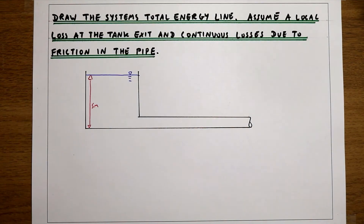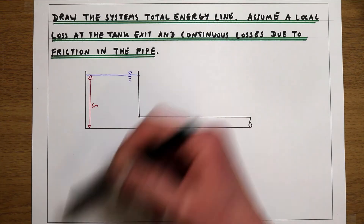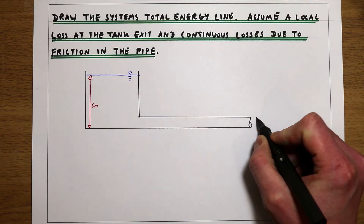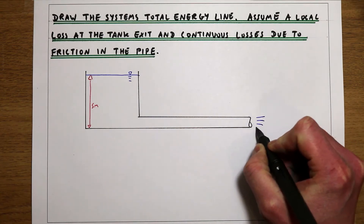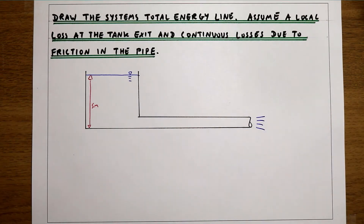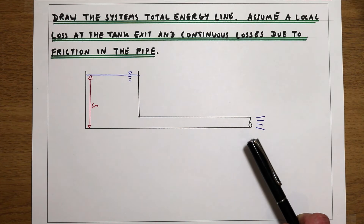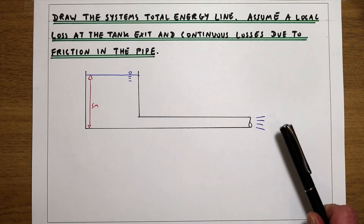In this video we've got a tank of water that's full to a depth of five meters, and that five meters of head is giving us a flow of water coming out of this pipe. We're asked to draw what's happening to the total energy as we move through this system — to draw a line along this system that tells us what's happening to the total energy in the system as we move through this pipe.